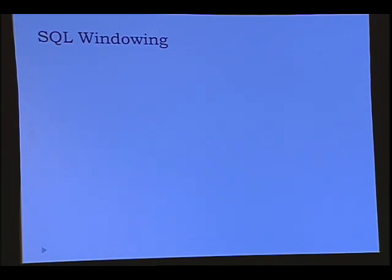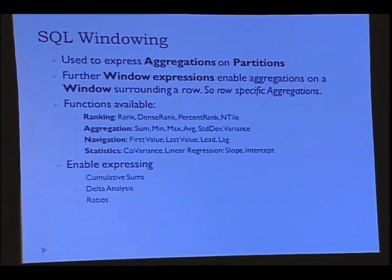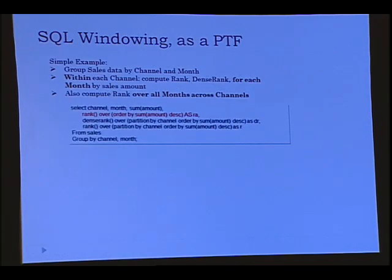How does this relate to SQL windowing? SQL windowing lets you express aggregations on partitions, and further, lets you express aggregations on windows around a row — so it's possible to do row-specific aggregations using windowing clauses. The kinds of things you do with windowing are ranking, aggregation, navigation, statistics, and analyses like cumulative sums, delta analysis, ratios, etc.